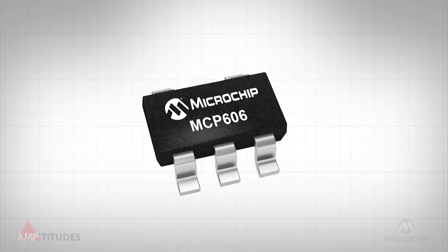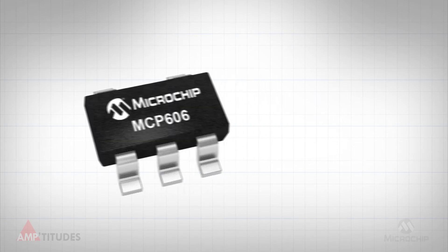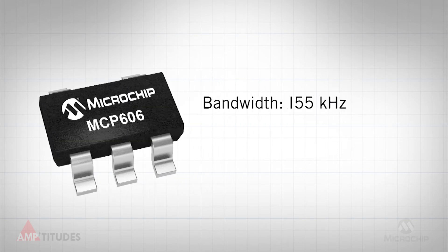Looking at Microchip's extensive portfolio of amplifiers, the MCP606 seems like a good fit. It has a bandwidth of 155 kHz and is trimmed, providing for very low offset. But let's take a look at the slew rate.